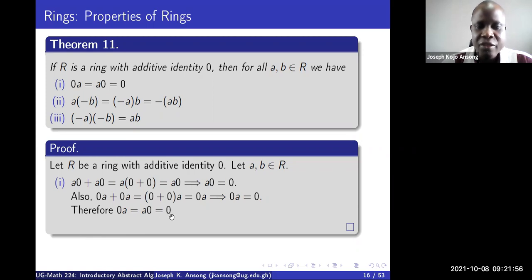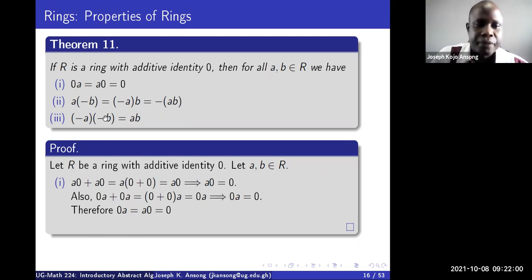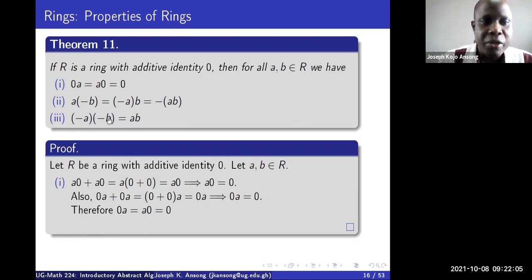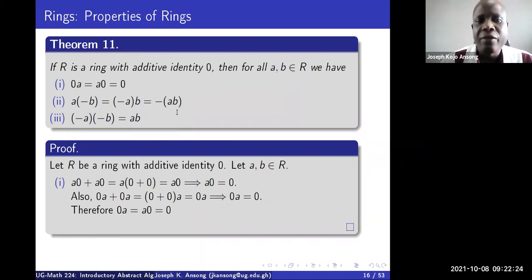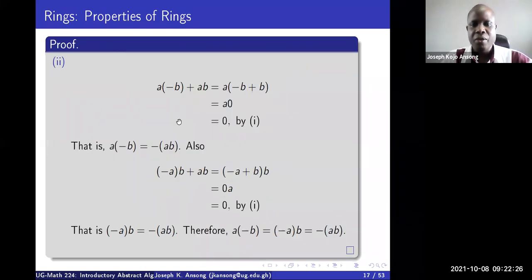Now we want to prove Part II. We're going to show that A times negative B equals negative (AB), and that negative A times B also equals negative (AB), and therefore all three are equal. In the first part, we take A times negative B and add it to AB, then show the result equals zero — which means A times negative B must be the additive inverse, i.e., the negative of AB.